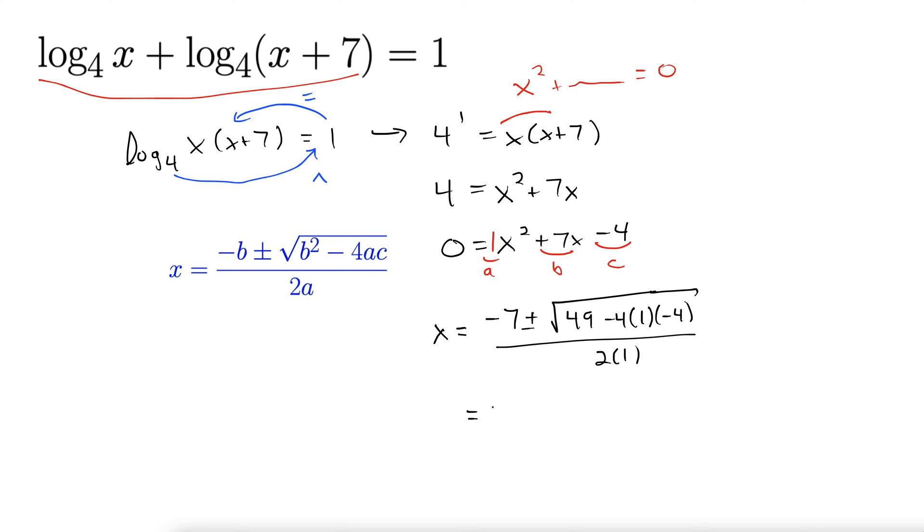Let's clean this up a little bit. Negative 7, plus or minus the square root of 49 plus 16. 49 plus 16 is 65, so 65 over 2.